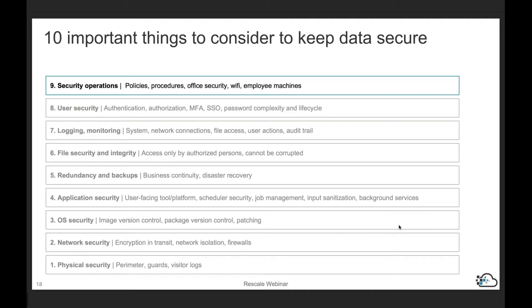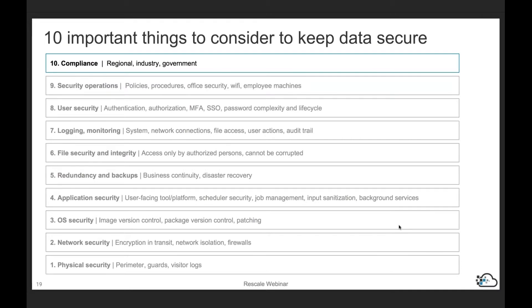Number nine: you need a live security operations team for day-to-day management of policies, translating them into procedures. You also want to care about office security — even Wi-Fi and employee machines — and manage bring-your-own-device scenarios. And lastly, number ten: compliance. This includes any regional or geographical compliance you need to meet, any industry-specific compliance such as health or defense, and any governmental or contractual obligations. Compliance sits at the top because a lot of the compliance pieces are realized through items one through nine.